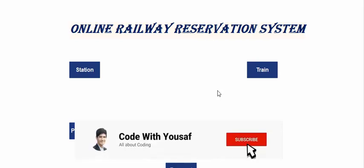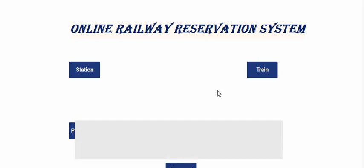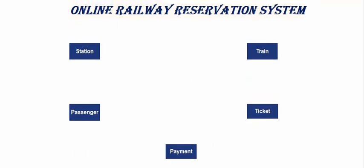Please subscribe to our YouTube channel. Now let's come to the entities of this ER diagram. We have these following five entities in this online railway reservation system: first the station, the train, the passenger, the ticket, and the payment.